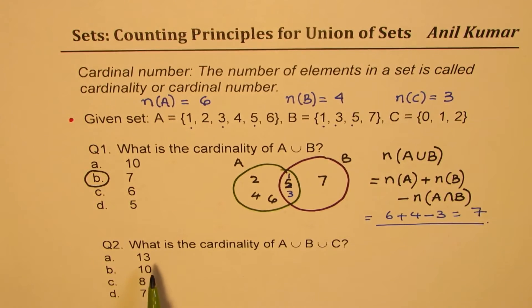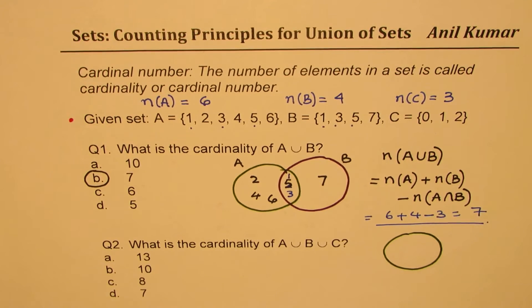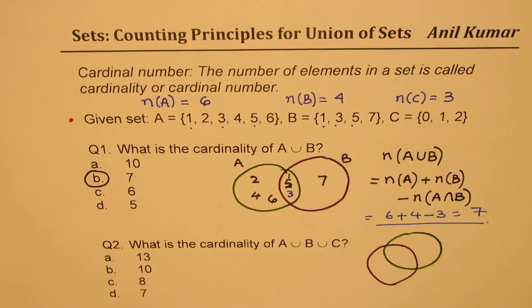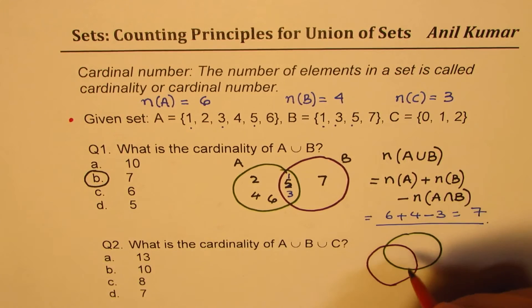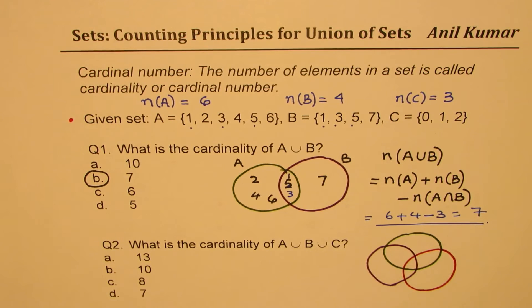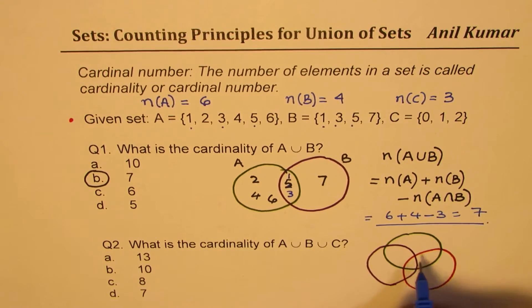The second one here is what is the cardinality of A union B union C. That means number of elements in the union of these three. So, let's now draw the Venn diagram to represent the information. We have now three sets. So, let us sketch them with three circles. So, let us say these are the three circles representing the three sets. Now, when you look at all three of them, then what do you notice? One is common to all three of them. So, whatever is common to all three will be right there, one.